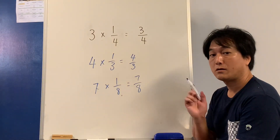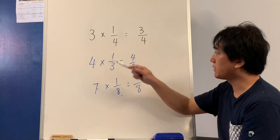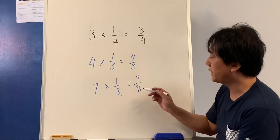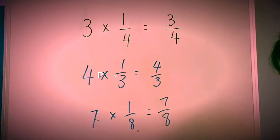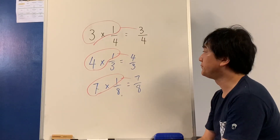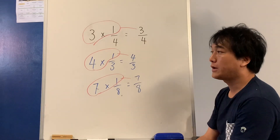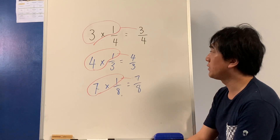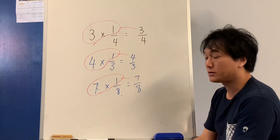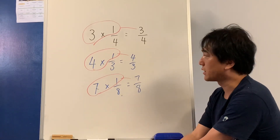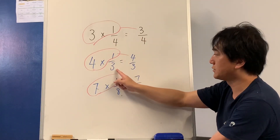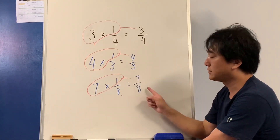Can you see a pattern? Let's pause the video and think about it. It's like a language — math is just a language. So 3 lots of 1 quarter is 3 quarters, 4 lots of thirds is 4 thirds, and 7 times 1 eighth is 7 eighths.